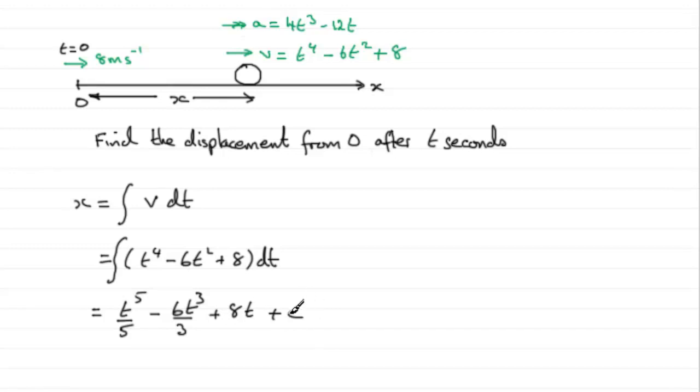So we need to work out what that constant of integration is. And to do that, we need to know some kind of initial condition. Well, we know that when t was 0, the particle started from the origin, so its displacement x would have been 0.